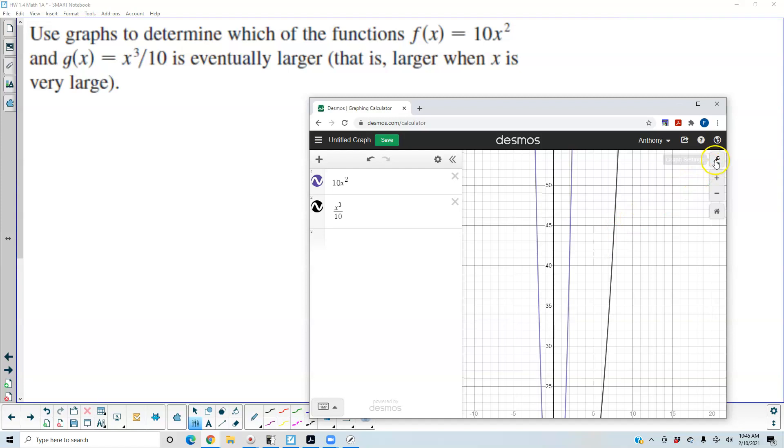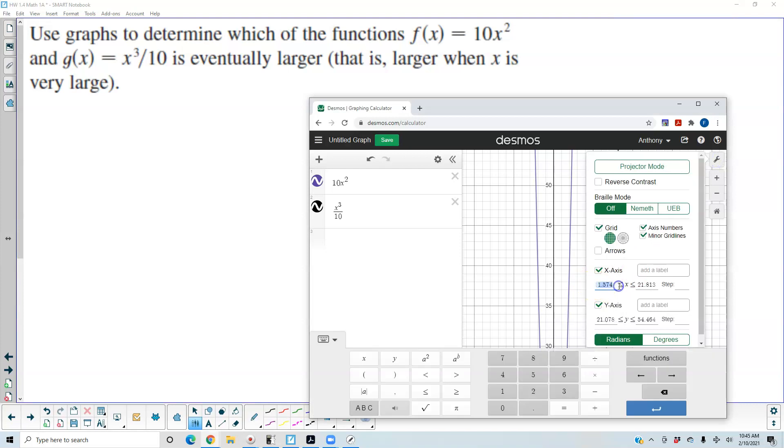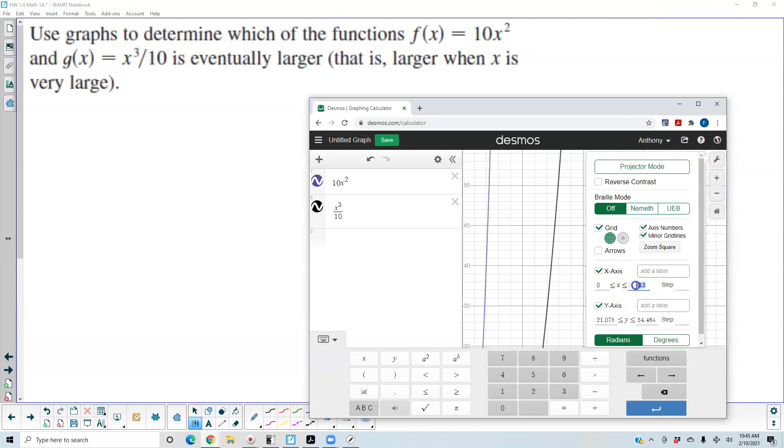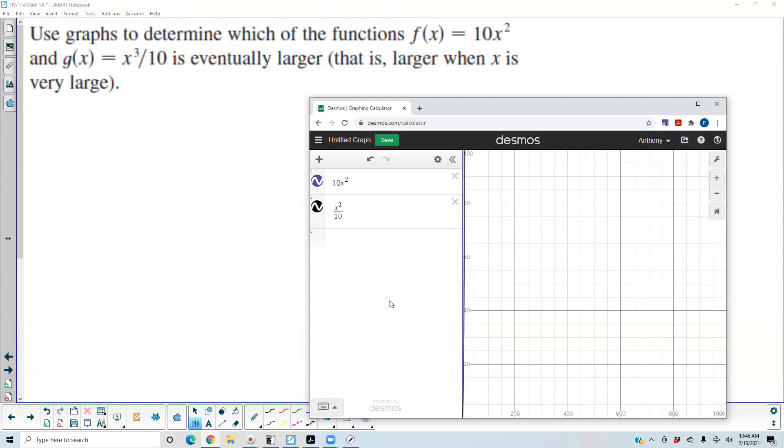So let's go ahead and put in our viewing window. So let's start at zero, and then we'll go to, let's say, 1,000. Over here is zero. We can go to 100. Okay, so that's not really telling us much.